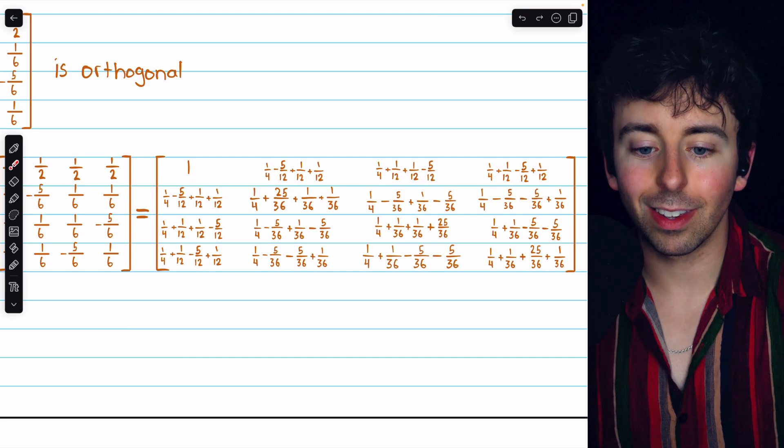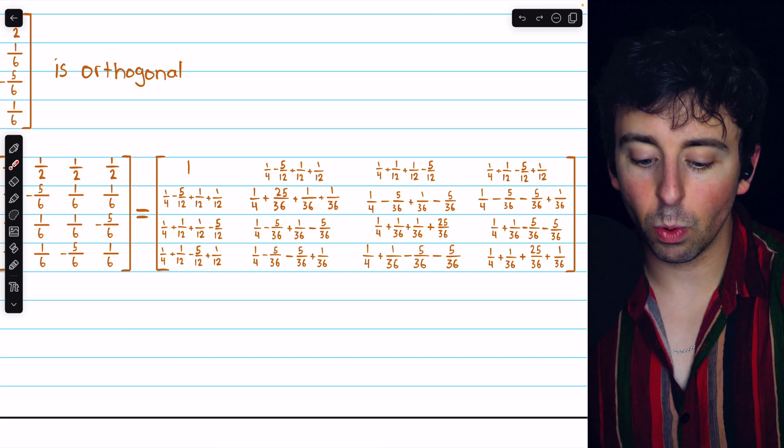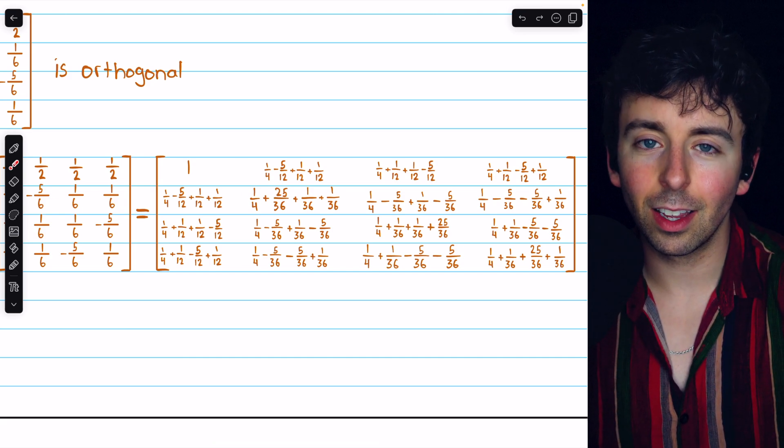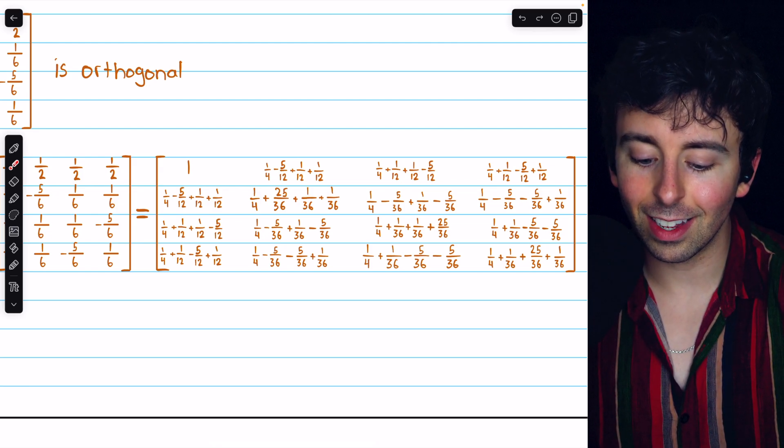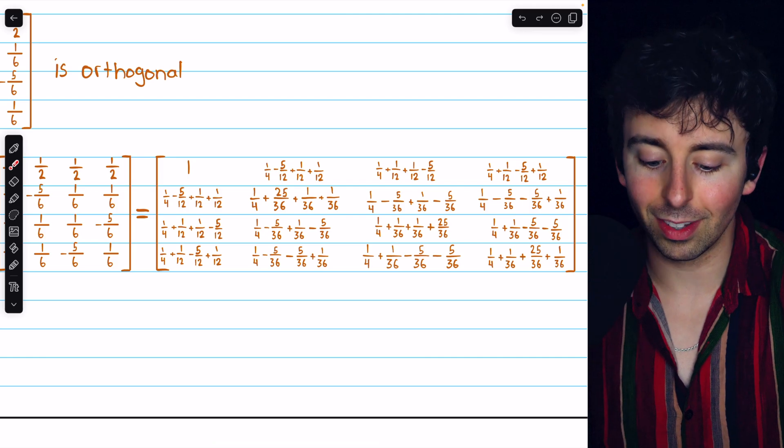1 fourth is 9 over 36, so this is 9 plus 25 over 36, so that's 34 over 36, plus 1 over 36, plus 1 over 36. So in total, 36 over 36, that's equal to 1.